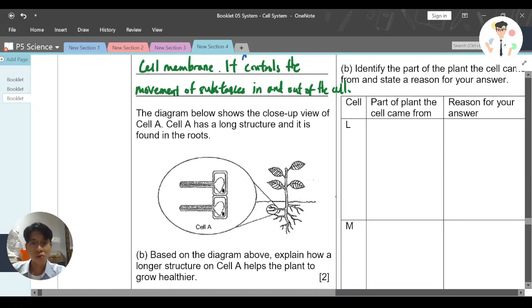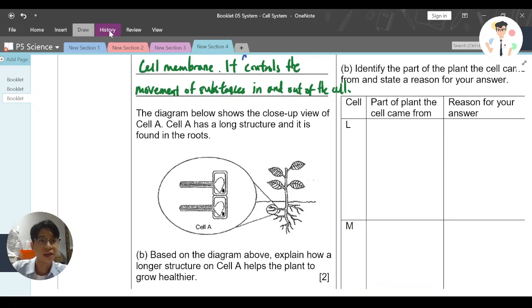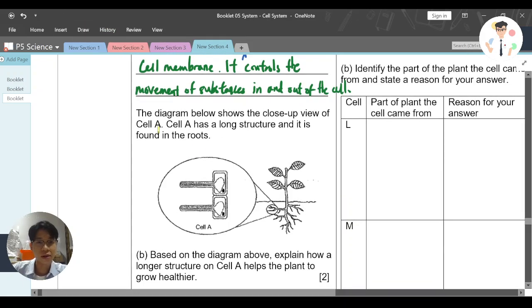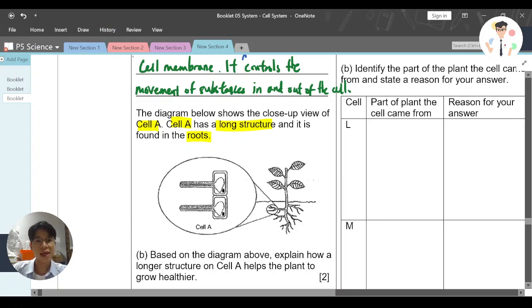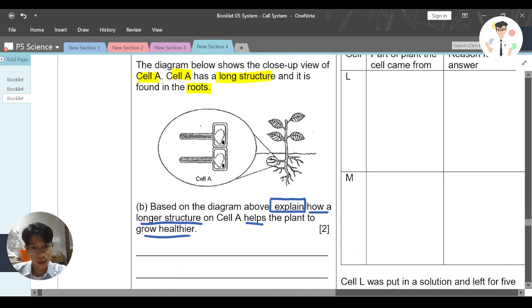The diagram below shows the close-up view of cell A. A close-up view of cell A. Cell A has a long structure and it is found in the root. So I know this is actually a root cell. And the question says explain - keyword here is explain, which means you need to explain in detail how a longer structure helps the plant to grow healthier.